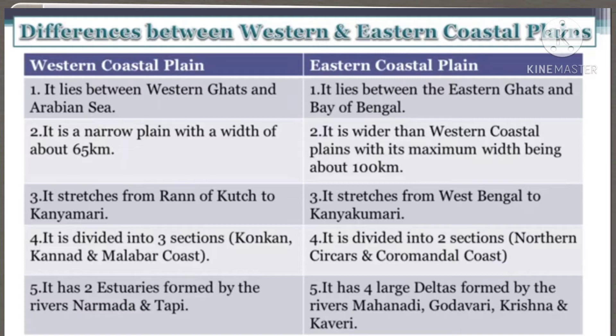The western coastal plain has two estuaries formed by the Narmada and Tapti rivers. The eastern coastal plain has four deltas formed by the rivers Mahanadi, Godavari, Krishna, and Kaveri.